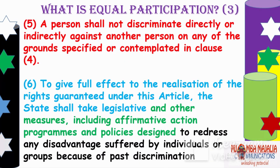Furthermore, a person shall not discriminate directly or indirectly against another person on any of the grounds specified in clause 4. To give full effect to the rights guaranteed, the state shall take legislative and other measures including affirmative action programs and policies designed to redress any disadvantages suffered by individuals or groups because of past discrimination. People living with disabilities are now high on the agenda — buildings must now cater for the disabled.